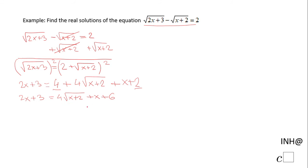Now we want to isolate the last radical, this 4 square root of x plus 2. So I'm going to subtract x and subtract 6 on both sides, and I'm going to get 2x minus x, which is x, minus 3 equals 4 times square root of x plus 2.